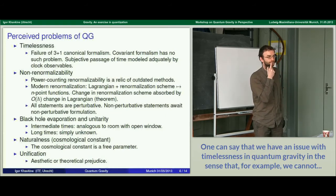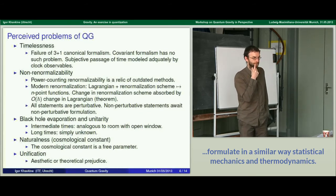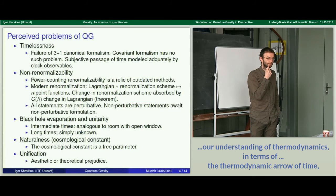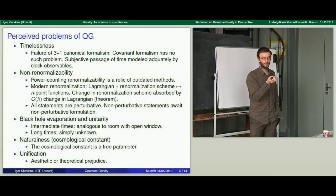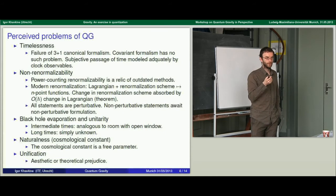One can say that we have an issue with timelessness in gravity in the sense that, for example, we cannot formulate statistical mechanics and thermal analysis in a similar way. I don't think there's a conceptual problem there — certainly there are many technical problems — but at the classical level, if you want a statistical theory including gravity, you construct a classical phase space and put a probability distribution on it. That's your statistical mechanics. In the quantum theory, you construct the quantum algebra of observables and then have a mixed state on that.